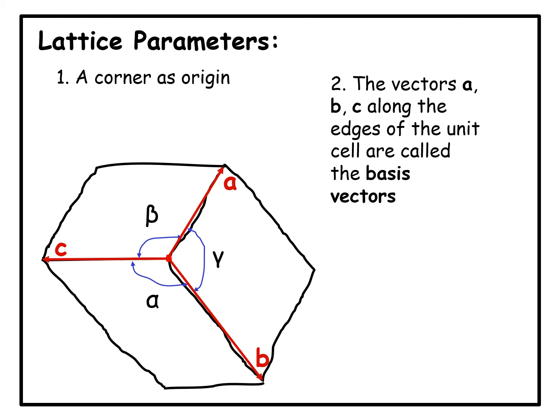The way to get that is we select a corner of the parallel piped as an origin and we select three vectors, the three edge vectors emanating from that corner, as the basis vectors, where a, b, and c are called the basis vectors of this lattice or rather for this choice of unit cell within this lattice.